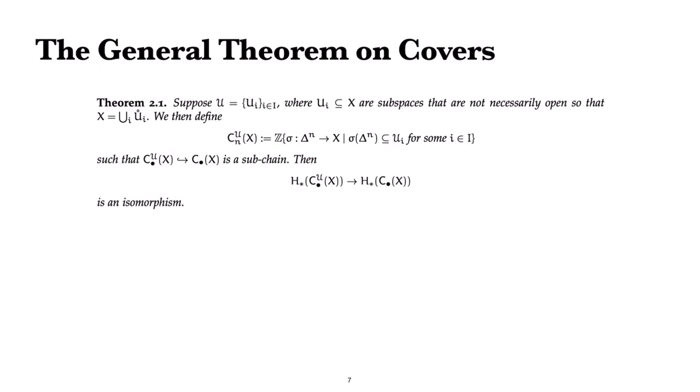We simply have a cover of a space and we take the chain group with all the singular simplices that land exactly on one of the covers. Obviously this gives us a sub-chain of the original chain group. The theorem then states that we have an isomorphism on homology.